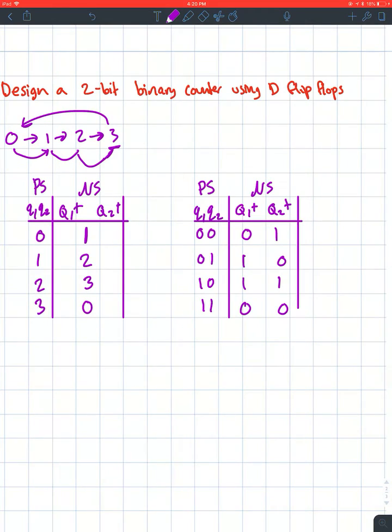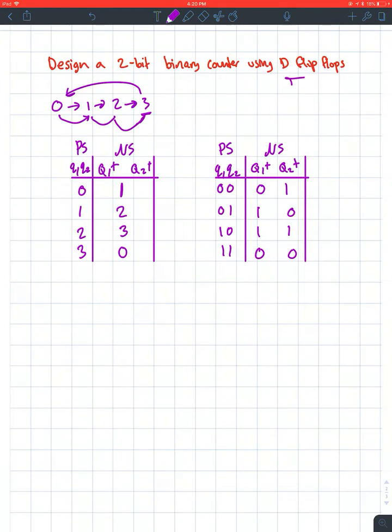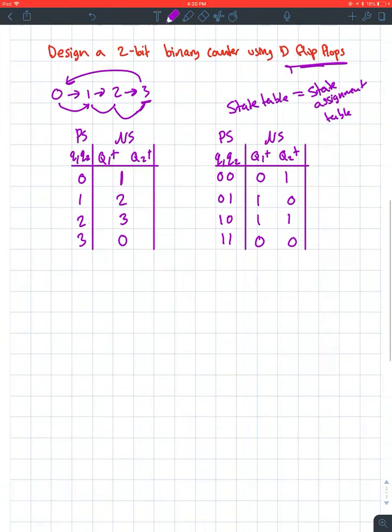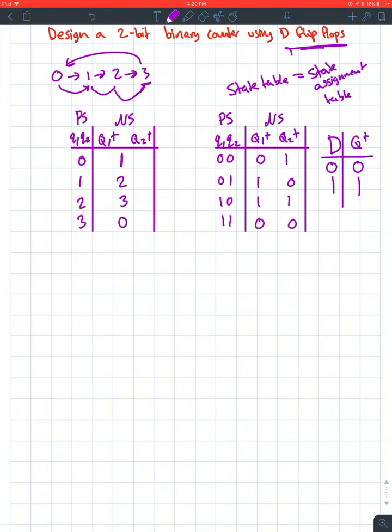I don't have an output for this. It says using D flip-flops, which is great because your state table and state assignment table are equal for a D flip-flop. When D is 0, Q plus is 0; when D is 1, Q plus is 1. This makes everyone's life easier.